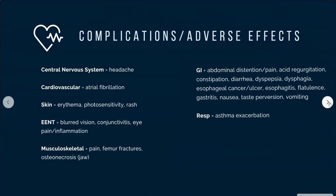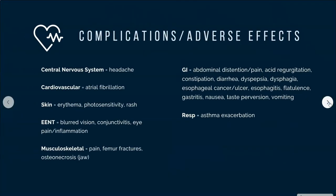Let's talk about the complications and adverse effects. Different body systems are affected: the central nervous system, cardiovascular system — we see atrial fibrillation — the skin, eyes, ears, nose and throat, and musculoskeletal. Musculoskeletal effects include muscle pain, femur fractures, and osteonecrosis, primarily in the jaw.